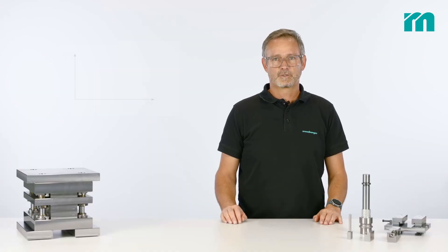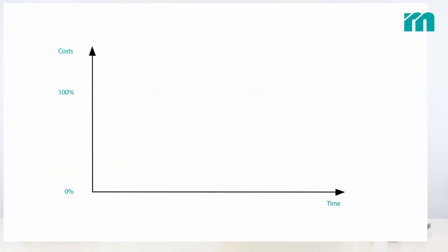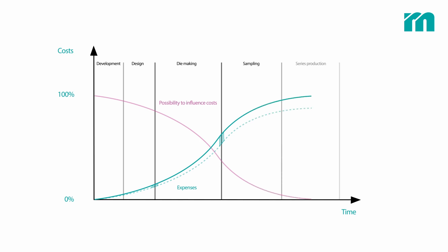The curve shows that the ability to influence costs is especially high during development and die design. The costs incurred, however, are relatively low compared to the total costs. Therefore, it is particularly important to already start standardization in this phase.